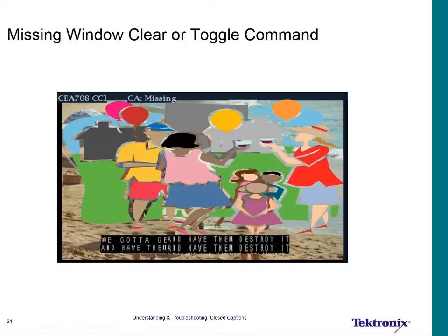Here's a capture of when a clear or toggle command gets missed, resulting in captions being displayed on top of captions. Captions come up and don't clear off screen. The next set of captions comes up — maybe shorter, maybe longer — and goes on screen while the previous captions show through. Some caption decoders also get very confused trying to put multiple windows on screen when they can't clear the windows off.